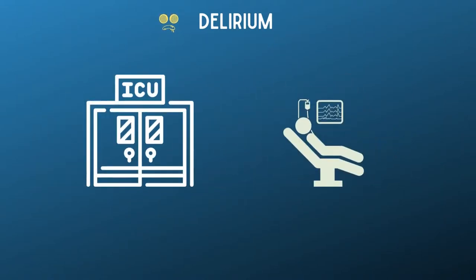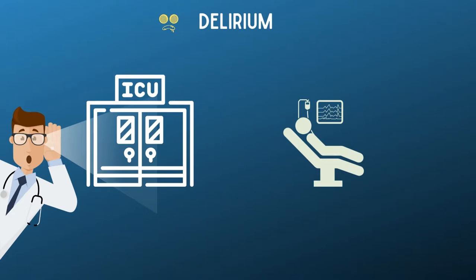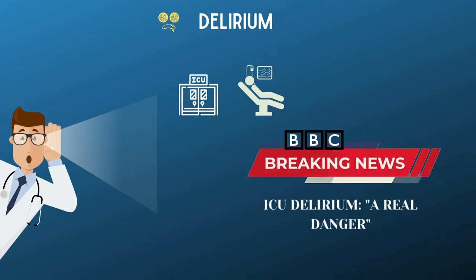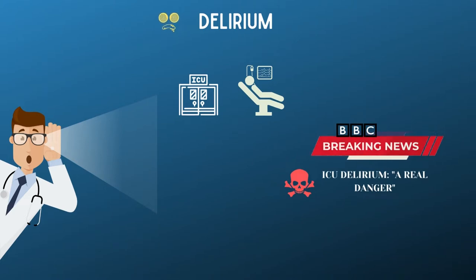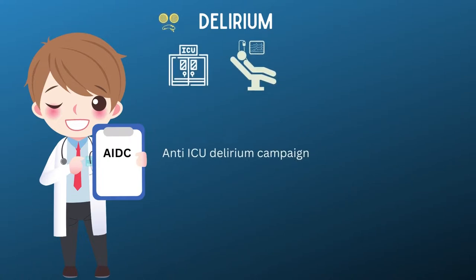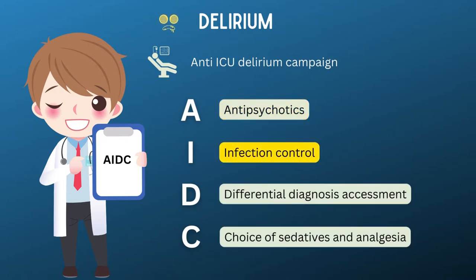Patients having a prolonged stay in ICU or similar environments are vulnerable to ICU delirium. To address this, the AIDC — Anti-ICU Delirium Campaign — is a common management protocol to follow in cases of ICU delirium, either due to prolonged hospital stay or a similar environment. It is a mnemonic where A stands for antipsychotics, I for infection control, D for differential diagnosis assessment, and C stands for choice of sedatives and analgesia.